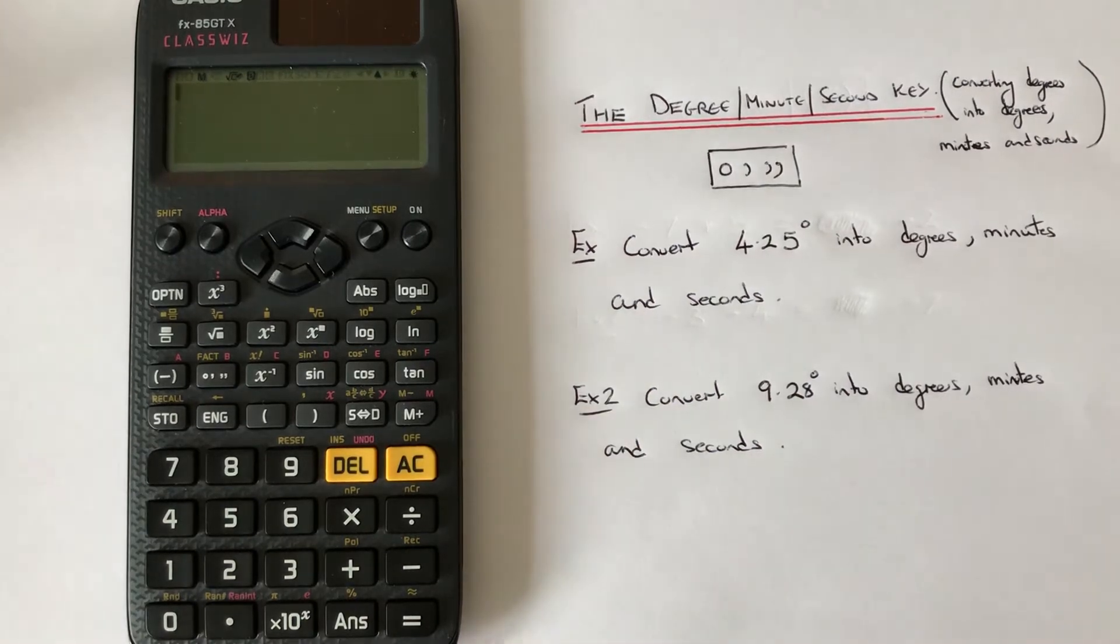Hi guys, welcome back, this is Maths3000. Today I'm going to show you how to use the degree, minutes and seconds key on a Casio ClassWiz scientific calculator to convert a number in degrees into degrees, minutes and seconds.